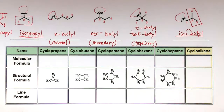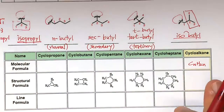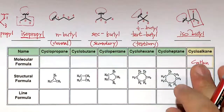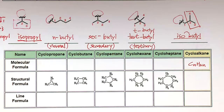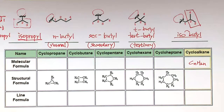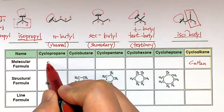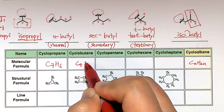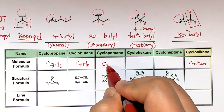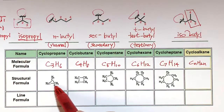Next: cycloalkanes. Cycloalkanes have the formula CnH2n. Alkanes have CnH2n+2, so cycloalkanes have two fewer hydrogens. By sacrificing those two hydrogens, the carbons form a ring — two C-H bonds are replaced by a C-C bond. For cyclopropane: 3 carbons, 6 hydrogens. Cyclobutane: C4H8. Cyclopentane: C5H10. Cyclohexane: C6H12. Cycloheptane: C7H14.